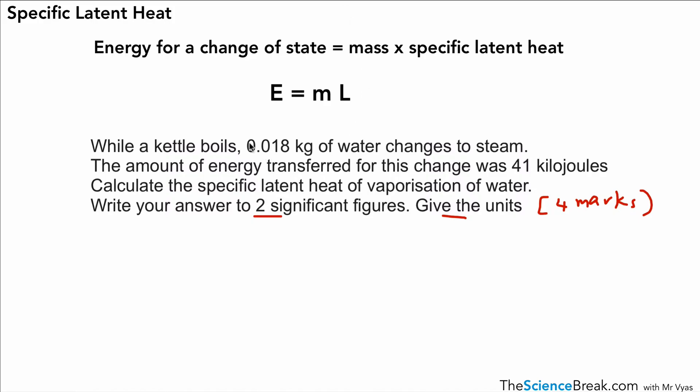We've got our mass, which is given there. We've got the amount of energy transferred, which is there, and we need to calculate the specific latent heat of vaporization of the water, which is there in red. The first thing is that the energy is given in kilojoules, so we should convert that to joules because that's the unit for our equation.